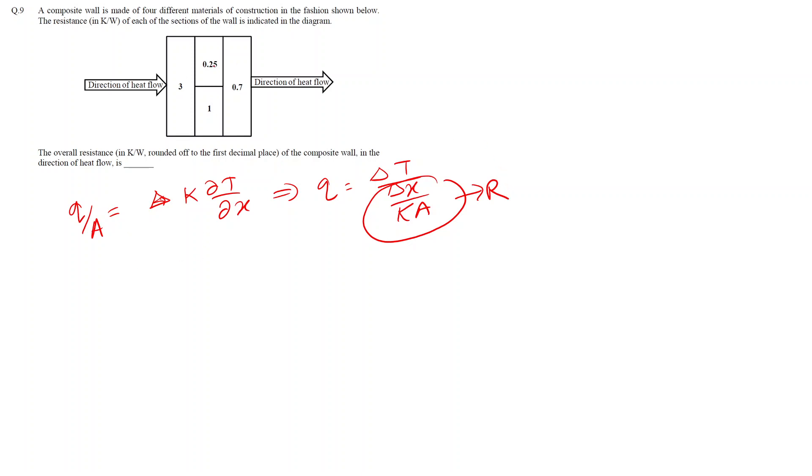Now in such a case where we have multiple resistances, we write this as ΔT/Σ(resistances). Here we have been given the resistance of each of these blocks. Let's name them: first block, second block, third block, and fourth block.